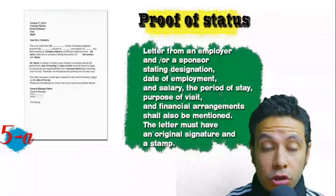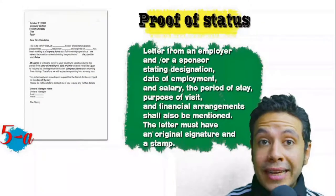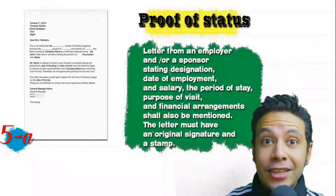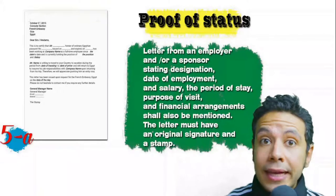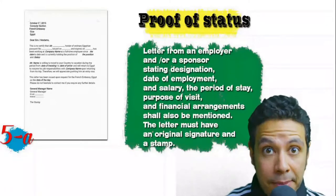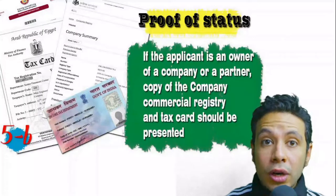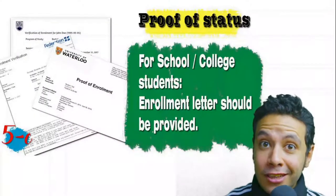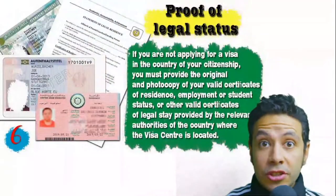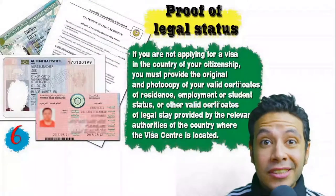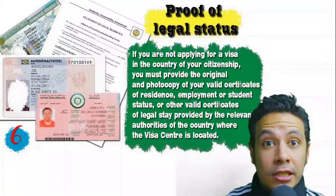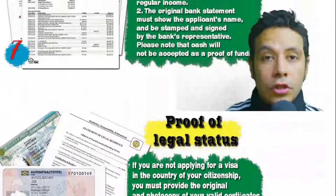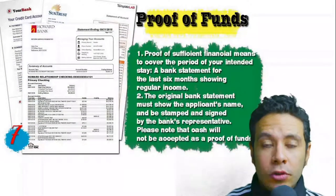In most visa application processes you will be required to provide a proof of status. If you are an employee, provide a letter from your employer or HR department mentioning your name, work details, salary, address, and contact numbers — with an original signature and stamp. If you own a business, your commercial registry and tax card must be presented. If you are a student, an enrollment letter from your university or school is needed. If you are applying from a country different than your own, you need a certificate of legal residence — or a valid residence visa for that country may also be accepted.